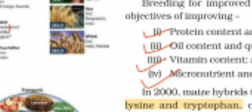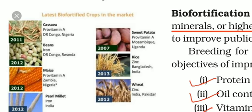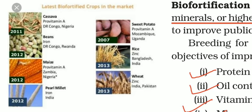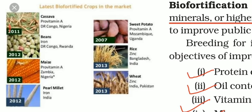The picture shows the latest biofortified crops in the market. Number one, cassava — rich in pro-vitamin A. Number two, beans — iron-rich beans. Number three, maize — rich in pro-vitamin A. Pearl millet — rich in iron. Sweet potato — rich in pro-vitamin A. Rice — rich in zinc. Wheat — rich in zinc. You can also see the names of countries written, indicating where these biofortified crops are being made.